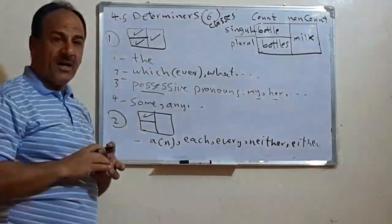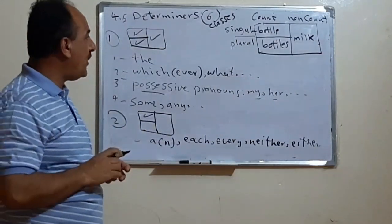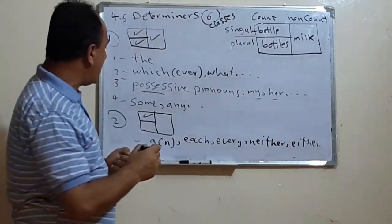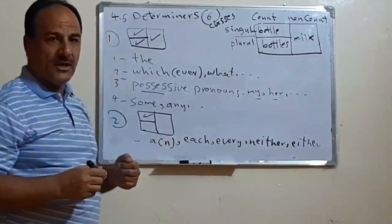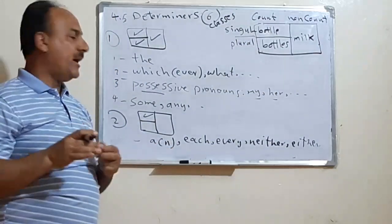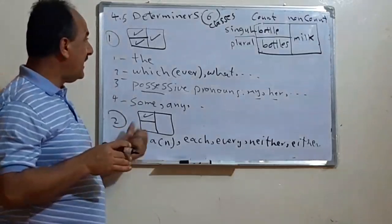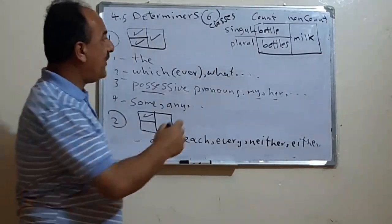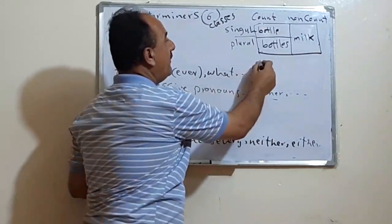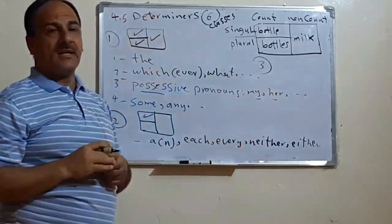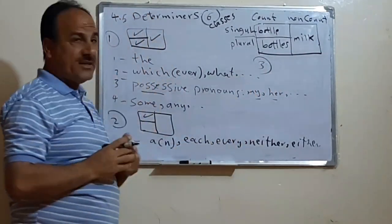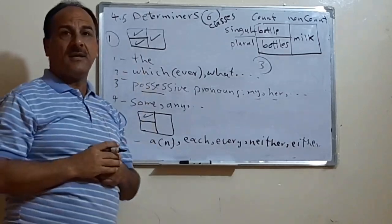Then we have the third category of determiners, which we are about to discuss next.